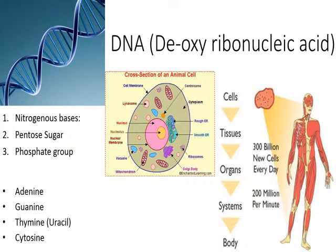Our topic today is DNA, or deoxyribonucleic acid. We have all heard about DNA in movies and serials. DNA is used for paternity testing, among other things. DNA is the master or controlling agent of our body — every characteristic of our body is based upon the DNA.